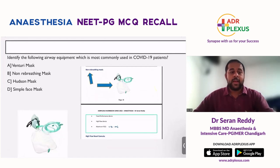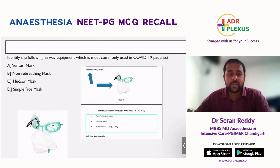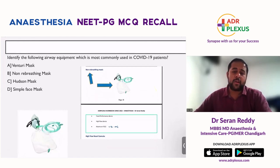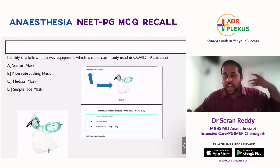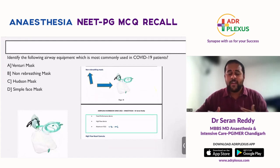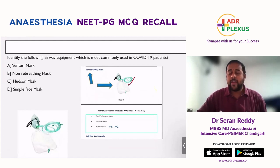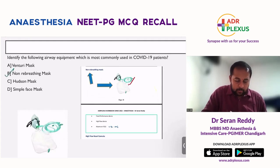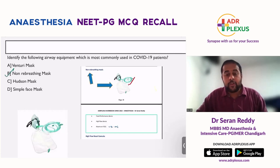During the difficult times of COVID, almost everyone working in hospitals used almost every oxygen delivery device possible — starting from nasal prongs, Venturi mask, simple face mask, non-rebreathing mask, and HFNC. HFNC was asked for the first time in an examination, and now they are asking about the non-rebreathing mask. This was very much anticipated and is what we covered in our workbook, so it is straightforward — this is a non-rebreathing mask.